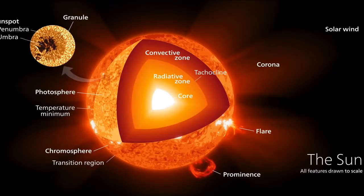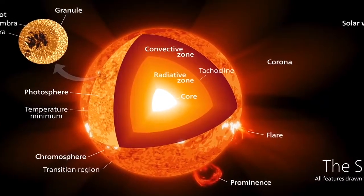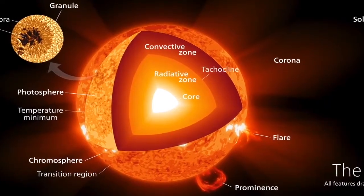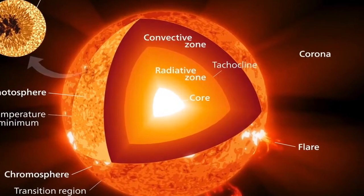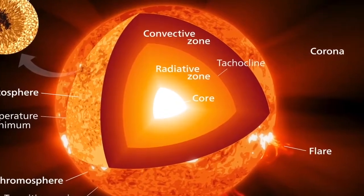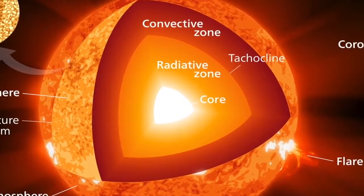Once energy is produced in the core, it has to go somewhere. The core of the Sun is about a quarter of the solar radius. Once you get to the edge of the core, the next layer out is called the radiative zone — a fairly thick layer above the core but below the surface of the Sun.